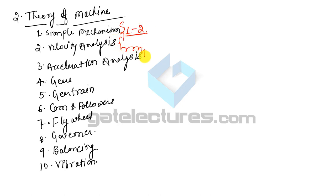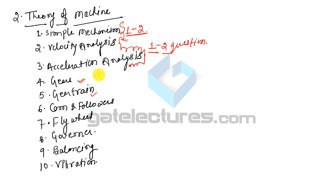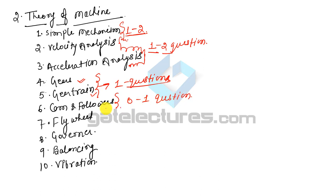Velocity Analysis and Acceleration Analysis together always contain 1 to 2 questions — minimum 1, maximum 2. These topics cannot be skipped. Gears were added to the syllabus after 2016, but you must study gears before gear trains. Gear Train always has 1 question. Cam and Followers contribute 0 to 1 question — it may or may not appear.